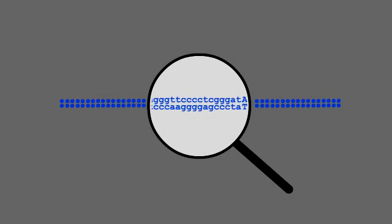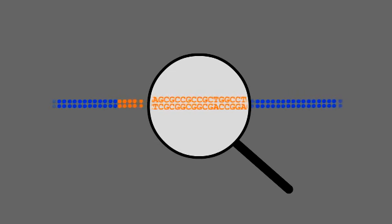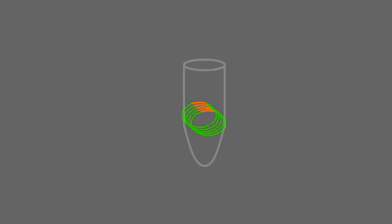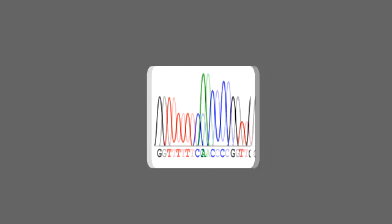Molecular cloning is a process of isolation of a specific DNA fragment and transfer of this fragment into a plasmid vector. As a part of a plasmid vector, the DNA fragment could be easily amplified, sequenced, stored for long periods of time, and used for gene expression and other functional studies.